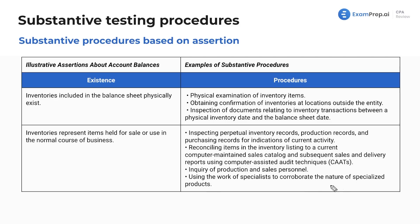Using the work of specialists to corroborate the nature of specialized products. Think hedge funds with very complex financial products. If you're holding securities classified as trading, that could be classified more towards inventory. If there are specialized types of inventory, you want to make sure it's properly recorded. For example, if you bought 10 trucks to sell but then decided to use them as equipment, you'd need to reclassify that properly — and for very specialized machines, that's when you bring in the specialist.